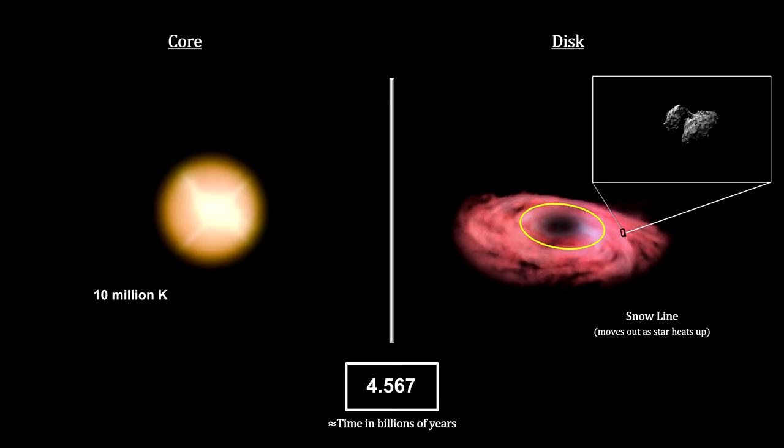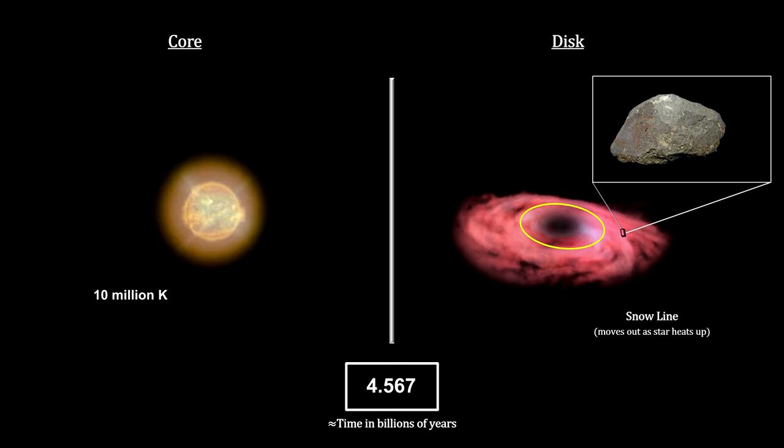The oldest of the starting material found so far was in the Allende meteorite and dated by lead isotope contents to be 4.567 billion years old. By convention, astronomers used this date for the age of the Sun and its solar system, often rounded up to 4.6 billion years.